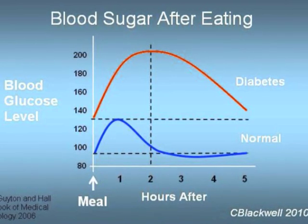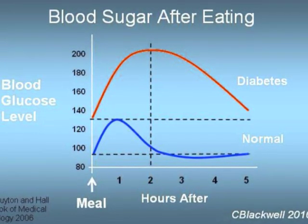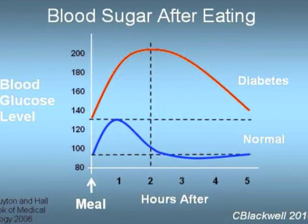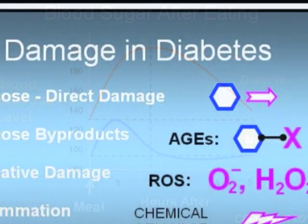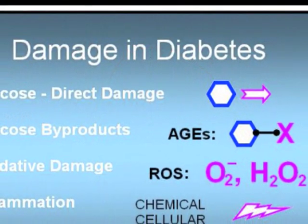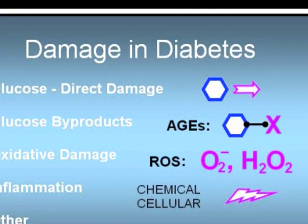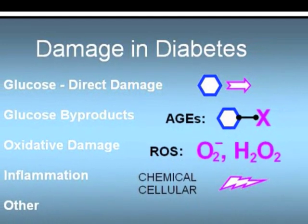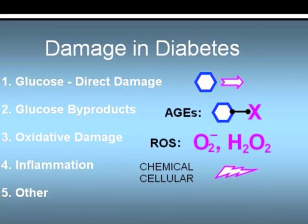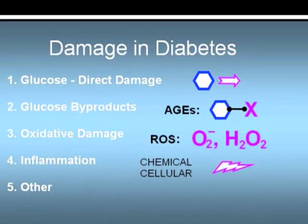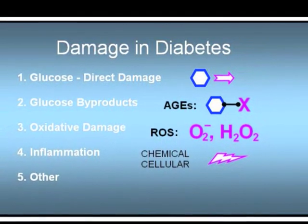Cells must find other sources of energy, so protein and fat metabolism are affected. Damage may occur directly from the elevated glucose, chemical byproducts of glucose, excess oxidation, increased systemic inflammation, and other processes.